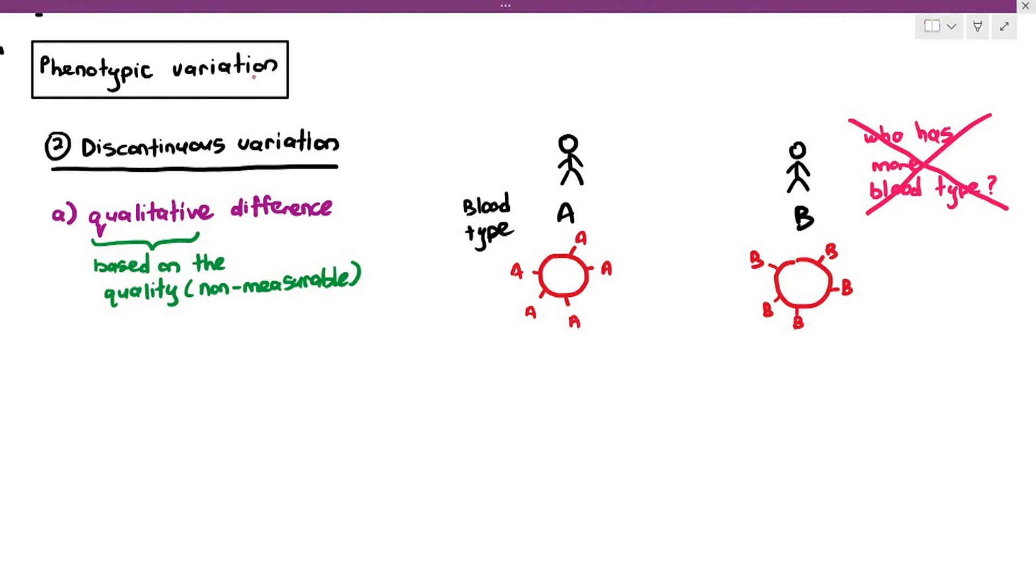When it came to quantitative differences, in the example of height, you can ask who has more height and who has less height, or who has more weight and who has less weight. Or who is darker and who is lighter in their skin color. But when it comes to blood type, you don't ask the question, who has more blood type and who has less blood type? That question sounds ridiculous. What you do is you see the quality of the blood type.